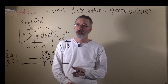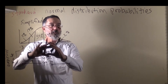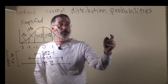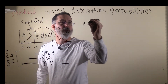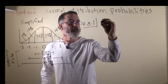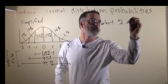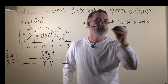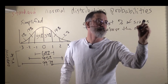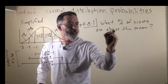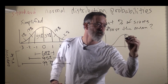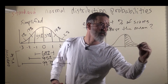With this simplified probability distribution, we can start working on some problems. Example problem number one is: what percent of scores are above the mean? You can draw it like this, and what we are interested in is all the scores that are above the mean.